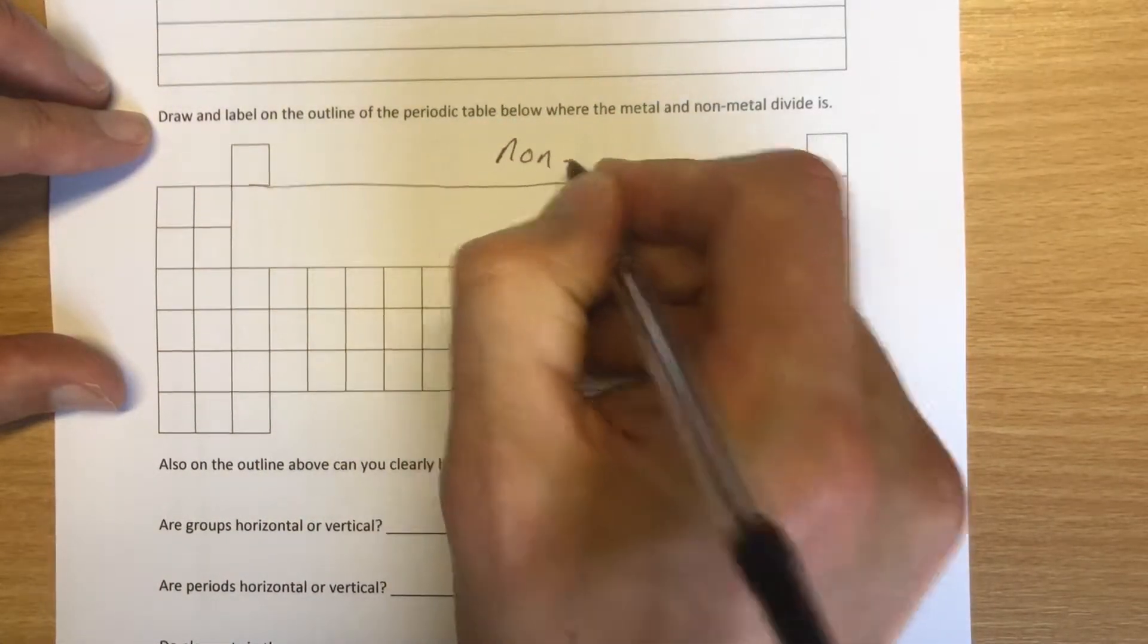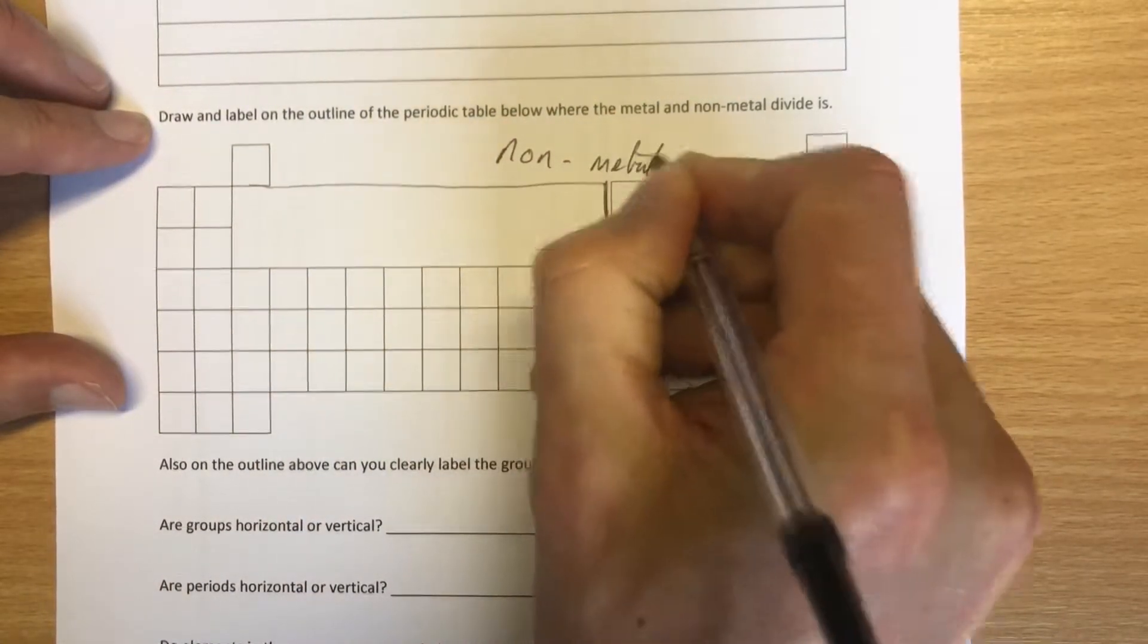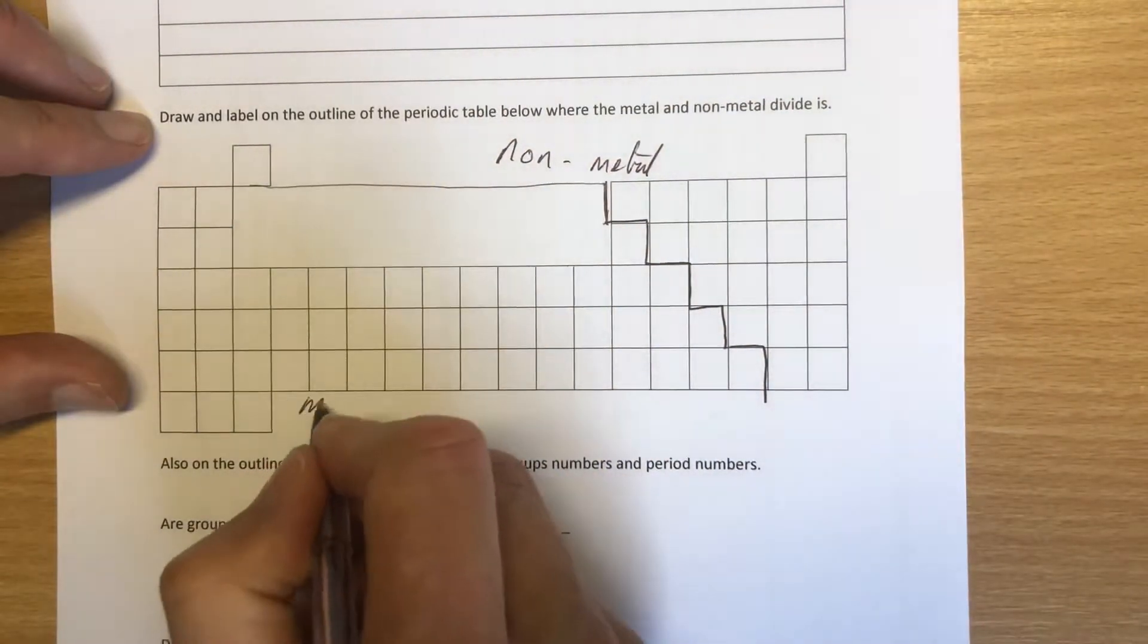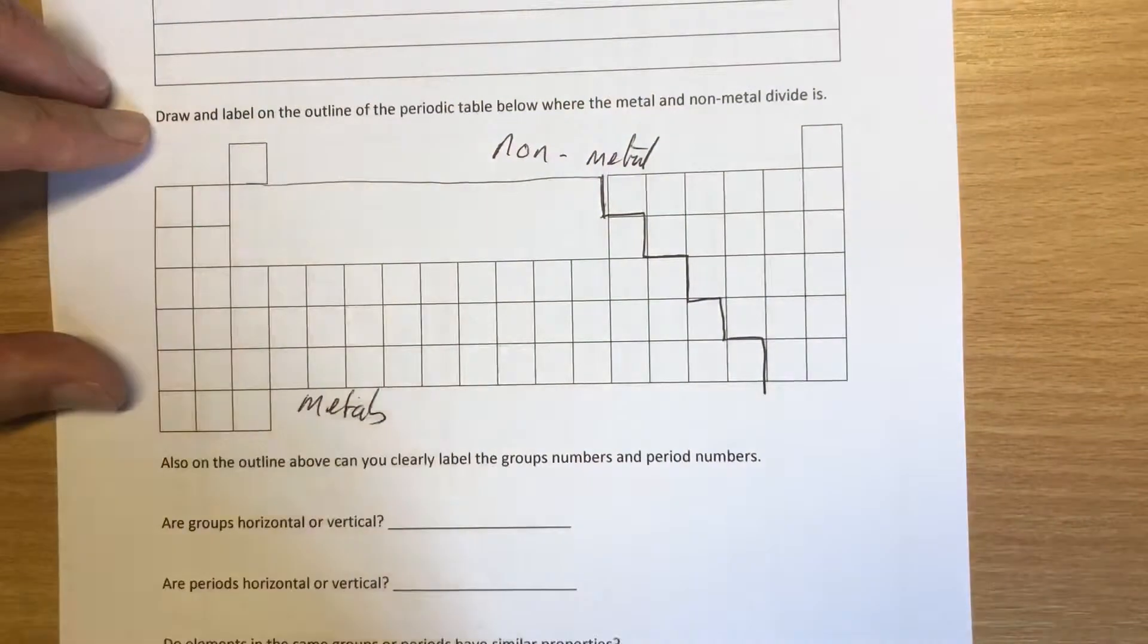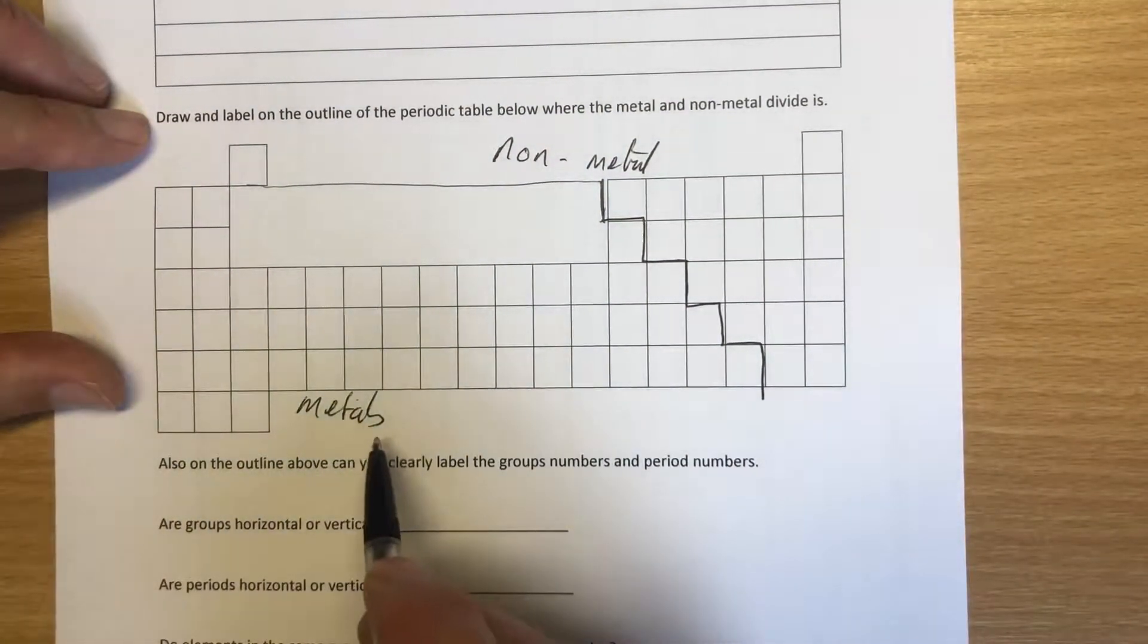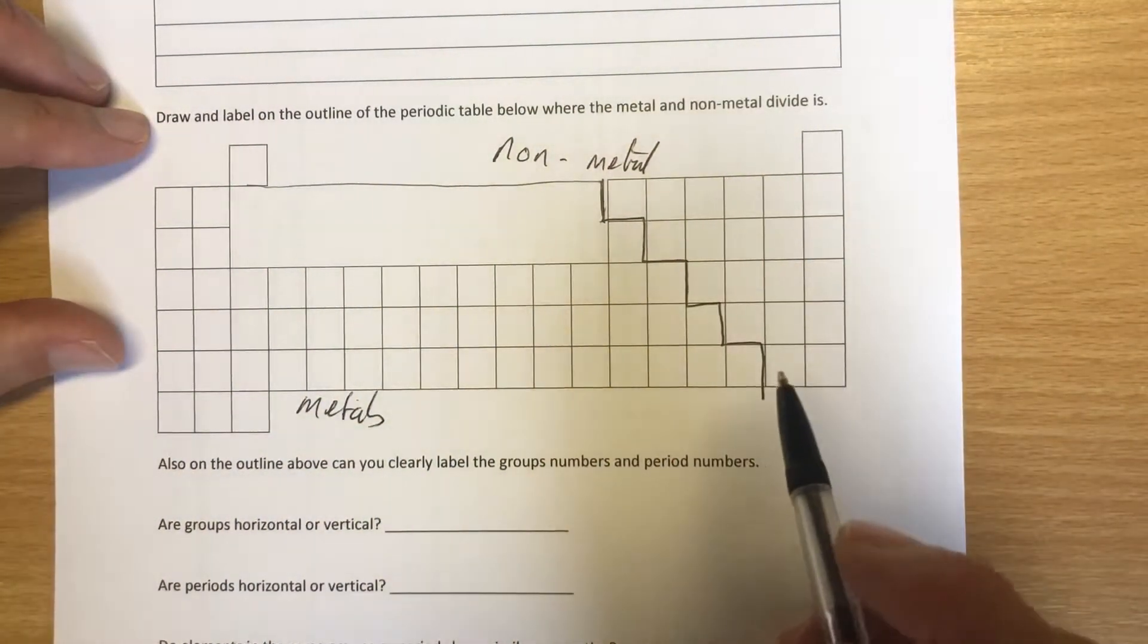So the non-metals are on this side and the metals are on this side. You can see from that quite clearly about three quarters of the elements on the periodic table are indeed metallic and the non-metals are in the minority.